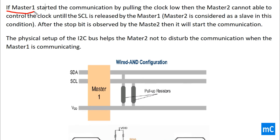If Master 1 started the communication by pulling the clock low, then Master 2 cannot control the clock until the SCL, i.e., serial clock, is released by Master 1. Also note that Master 2 is considered as a slave in this condition. After the stop bit is observed by Master 2, then only Master 2 can access the bus so that it can initiate its communication. The physical setup of the I2C bus helps Master 2 not to disturb the communication when Master 1 is communicating.